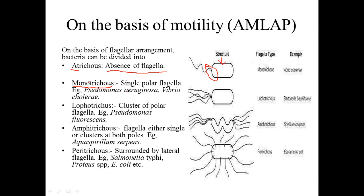Monotricus flagella are majorly present in Pseudomonas aeruginosa as well as Vibrio cholerae. Next is the Lophotricus flagella. In Lophotricus, you can see there is a cluster of flagella at one polar end. This arrangement is called Lophotricus flagella, and an example is Pseudomonas fluorescens.